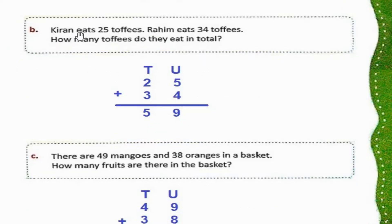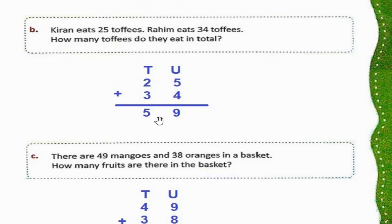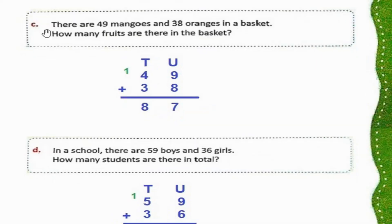Part B: Karen eats 25 toffees. Raheem eats 34 toffees. How many toffees do they eat in total? So hum 25 ko 34 ke saath add karenge. 25 plus 34: 5 plus 4 is 9, 2 plus 3 is 5. They ate 59 toffees in total.